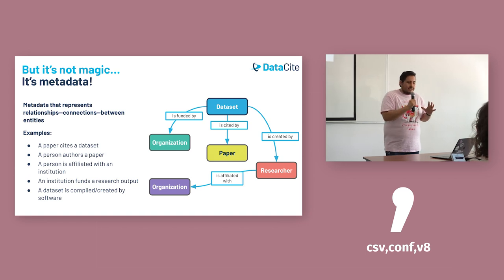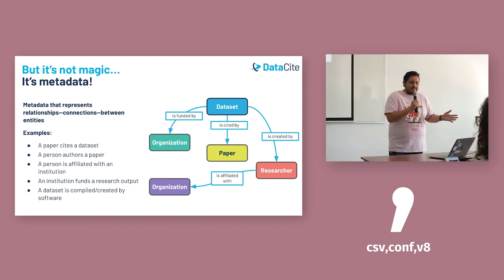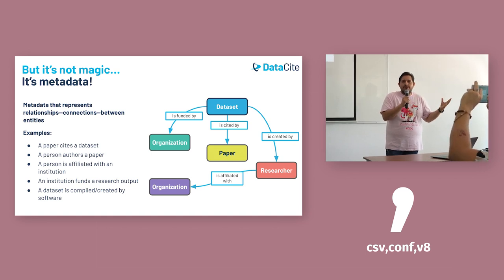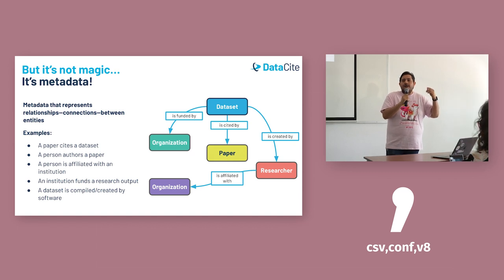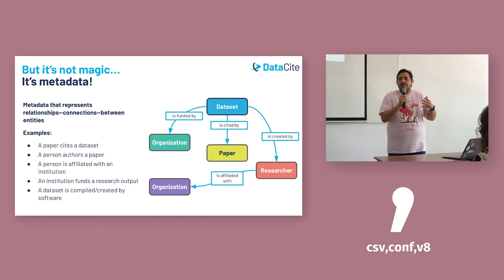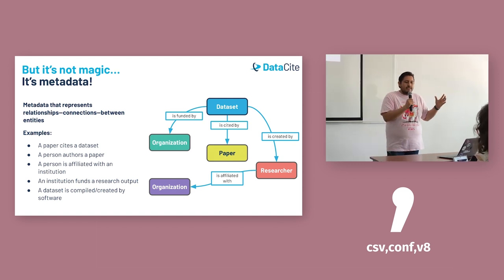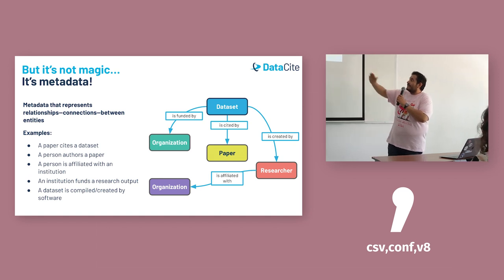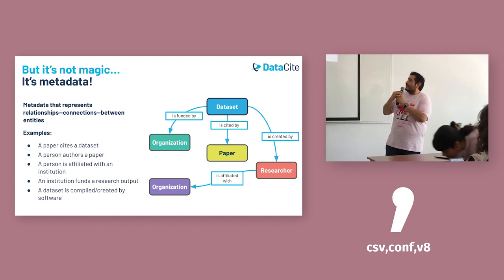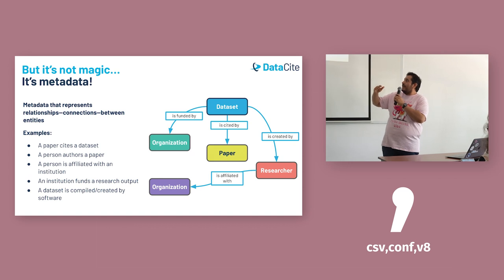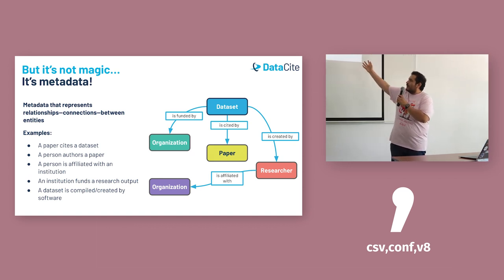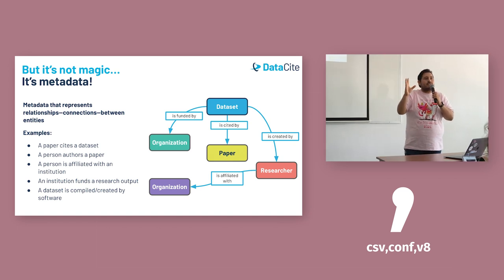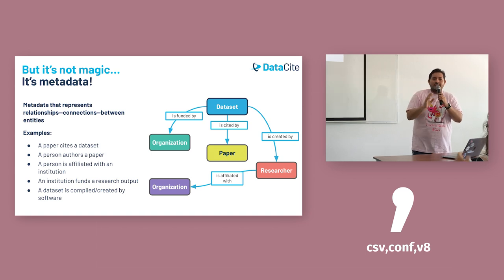Everything sounds great, but it's not about magic — it's about metadata. Keeping research connected is essential to achieve our goals as researchers, as authors. Any research output — whether a data set, code, journal article — is essential to be discovered and visible for everyone. Connection metadata represents relationships or connections between different entities. For example: a paper citing a data set, a person authoring a paper, a person affiliated with an institution, an institution funding a research output, or a data set compiled by software. We can have all these relationships thanks to metadata that glues all these entities together.